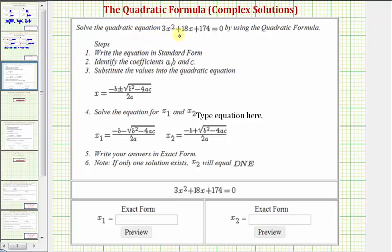We want to solve the quadratic equation 3x² + 18x + 174 = 0 using the quadratic formula. Let's go ahead and do this on the next slide where we have more room.